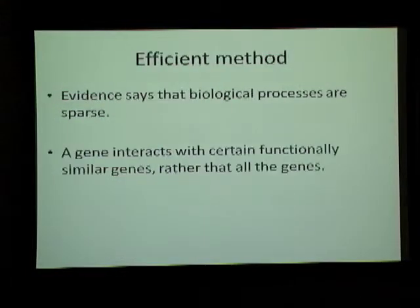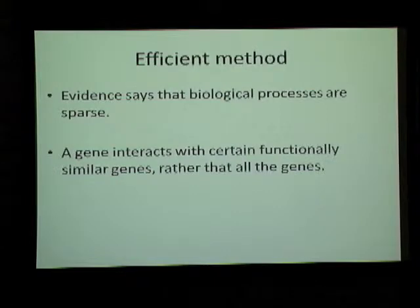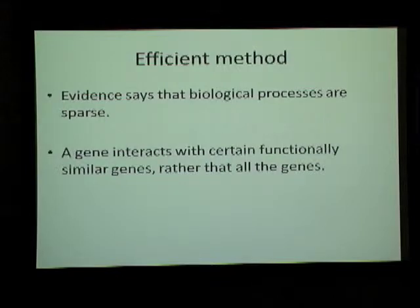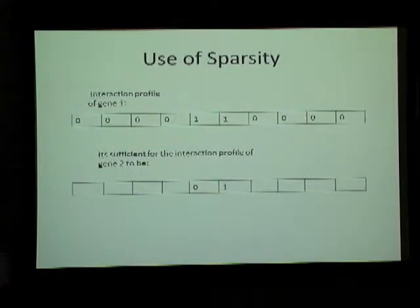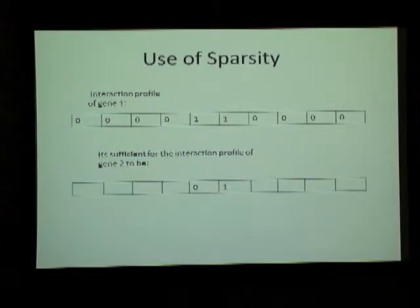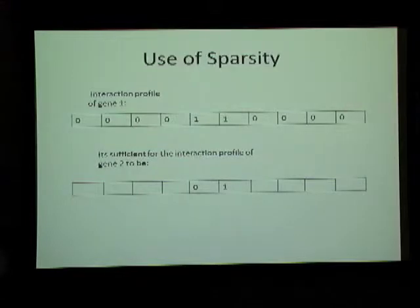One way to make it efficient: evidence and previous studies show that biological processes are sparse. This means each gene will never interact with all of the genes but interacts with its own similar functional genes, hence clustering with them. So if this is the interaction profile of a gene, it is sparse with just two non-zero elements. For the next gene, it is sufficient to measure only at these points, because ultimately when we find similarity between two genes those values will be multiplied, and at the zeros they will be cancelled. So there is no need to do all those experiments.